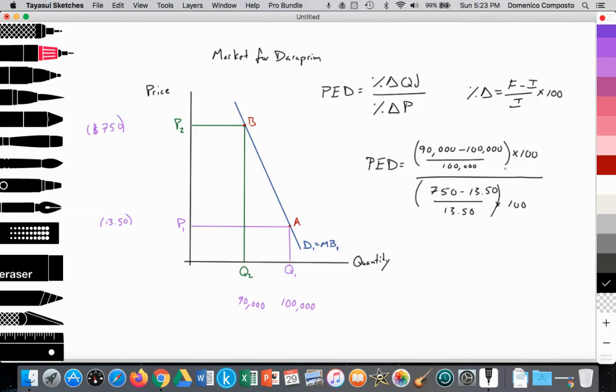So on a paper exam for the IB, you would be given data, data for this point, this point, this price, this price, and you'd have to calculate the elasticity of the demand curve. So when you work this out,